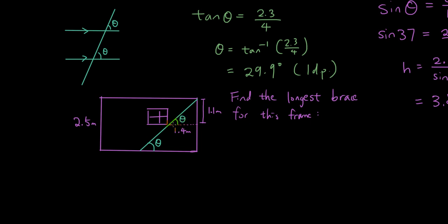So this angle is equal to this angle, which means we can use the smaller triangle here because this is a right angle triangle as well to figure out theta.